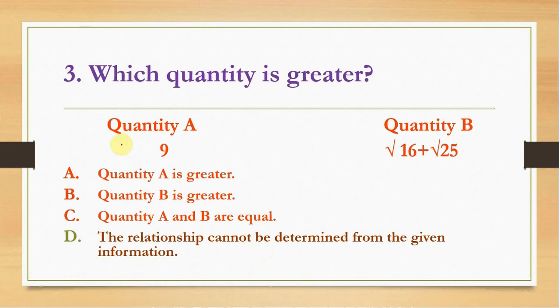Question number three is very simple again. We have to compare nine with this sum. Most of the students get confused about the square root. They take the values of √16 to be positive 4 and negative 4, and the value of √25 to be negative 5 and positive 5. So in this case the answer is D.